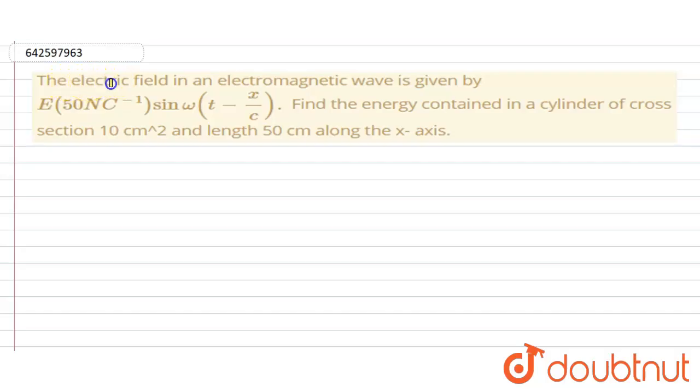Hello everyone. In this question, the electric field in an electromagnetic wave is given by E = 50 Newton per C sin omega multiplied by T minus X by C.